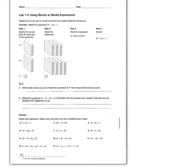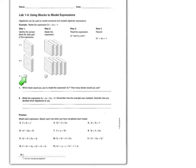The next part of this inquiry lab is to take our algebra blocks and model numerical and variable algebraic expressions. Identify the correct block for each part of the expression, model the expression, and record it. For example, here we have x squared, xy, and a one. We have three x squared, four xy, and one green. Our expression is three x squared plus four xy plus one.